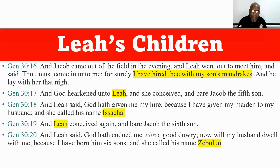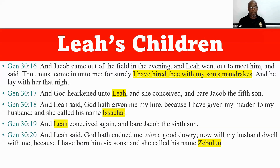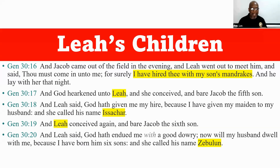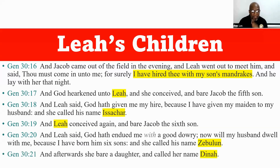And Leah said, 'God had given me my hire, because I have given my maiden to my husband,' and she called his name Issachar — that's how Issachar came, from a husband that was hired. And Leah conceived again and bore Jacob the sixth son. And Leah said, 'God has endued me with a good dowry; now my husband is going to come live with me, because I've given him six sons,' and she called his name Zebulun. And afterwards she bore a daughter and called her name Dinah.